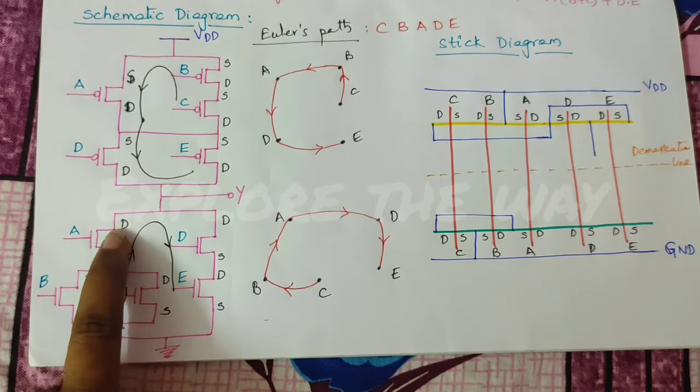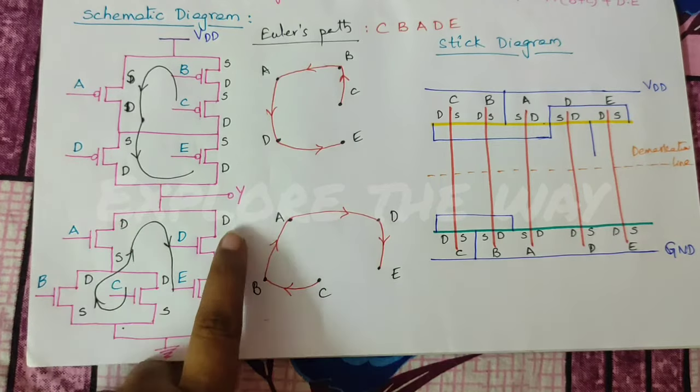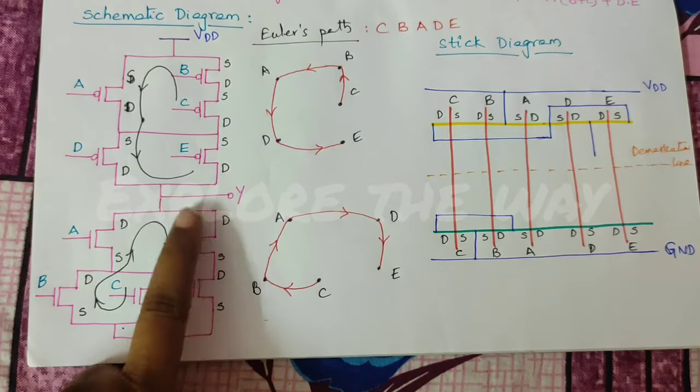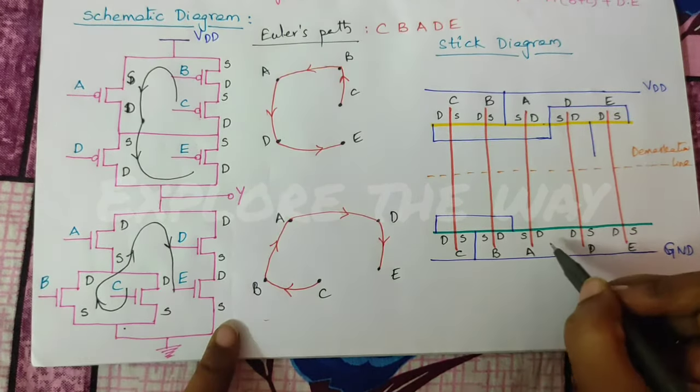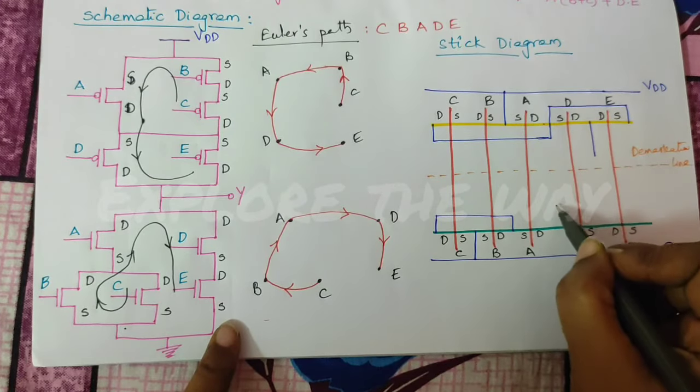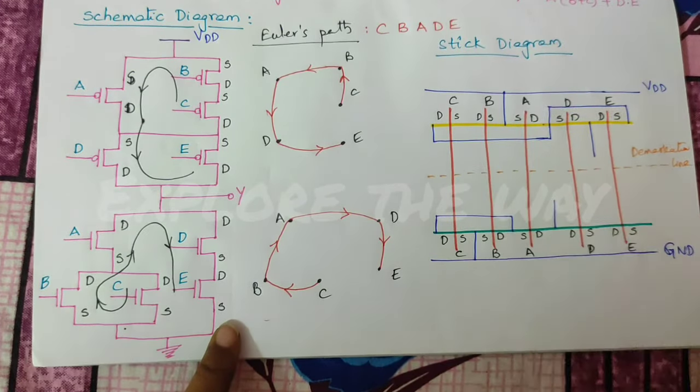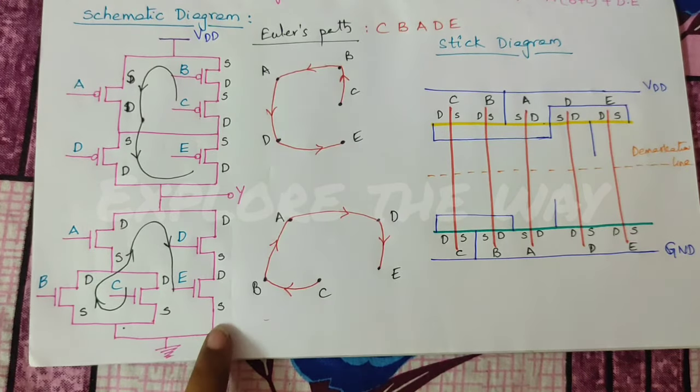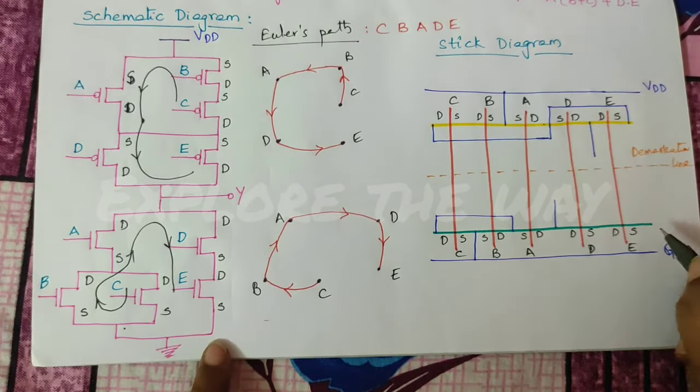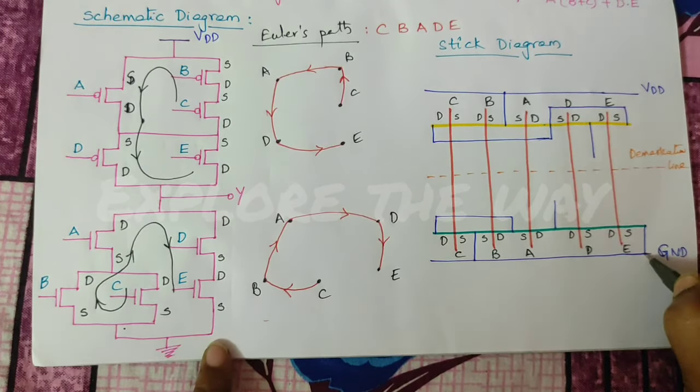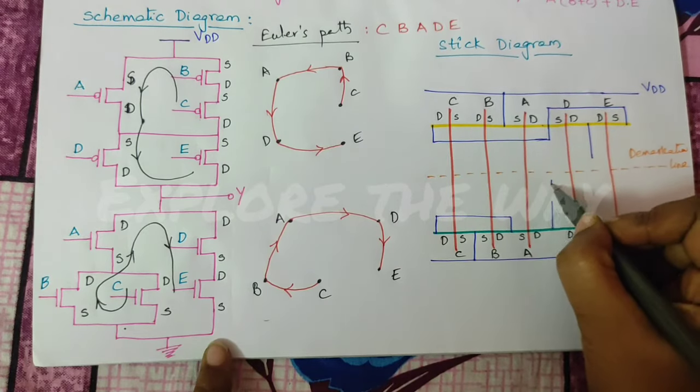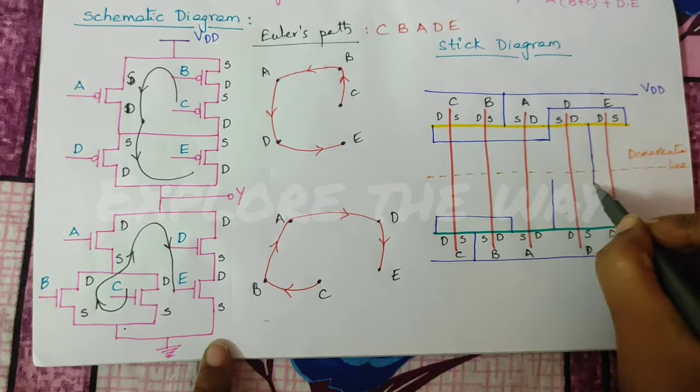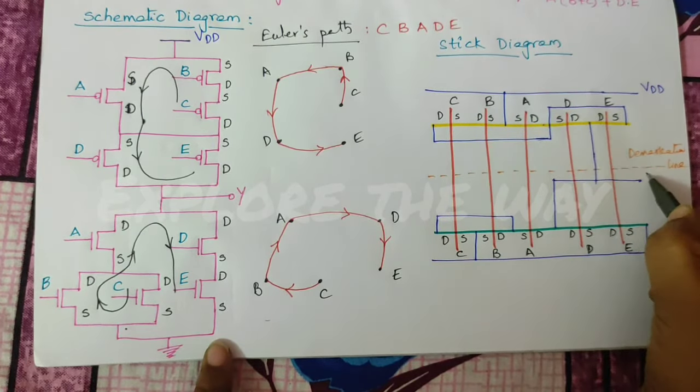And, drain of A and D are connected to output. A, D, and this one, this part is connected to output. Next, source of E also connected to ground. And, these are the outputs. We can take the output here.